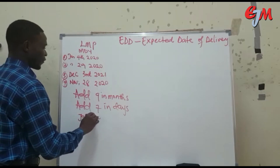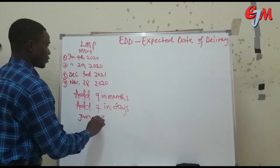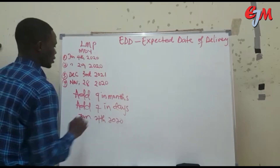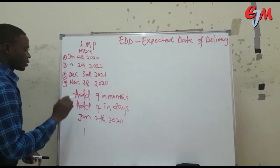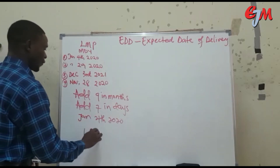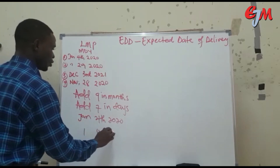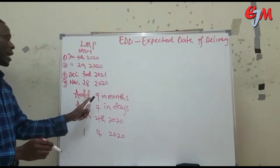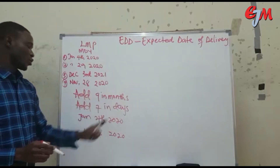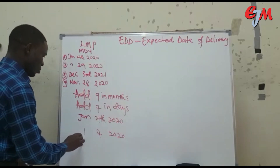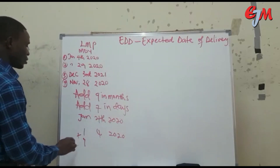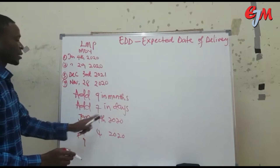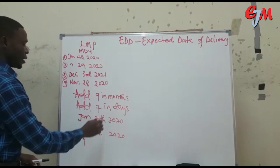Let's take the first example. The first day of Adobe's last menstrual period was January 4th, 2020 — that is month 1, day 4, year 2020. As the formula says, add 9 in months and add 7 in days.